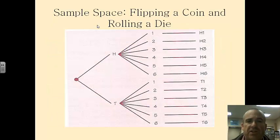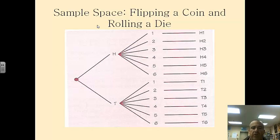You can do a chart like this as well. So let's say we're going to first flip a coin, and then we're going to roll a die. You can use a chart like this, a tree diagram, to help you organize your sample space. So it's a nice way to figure out what the sample space is.